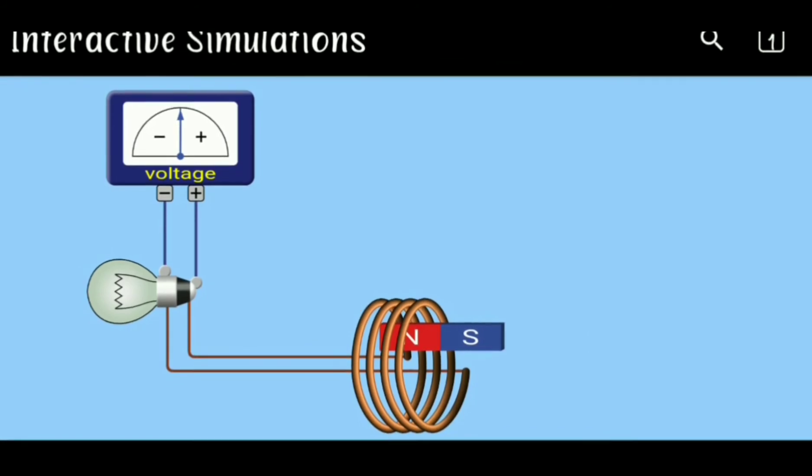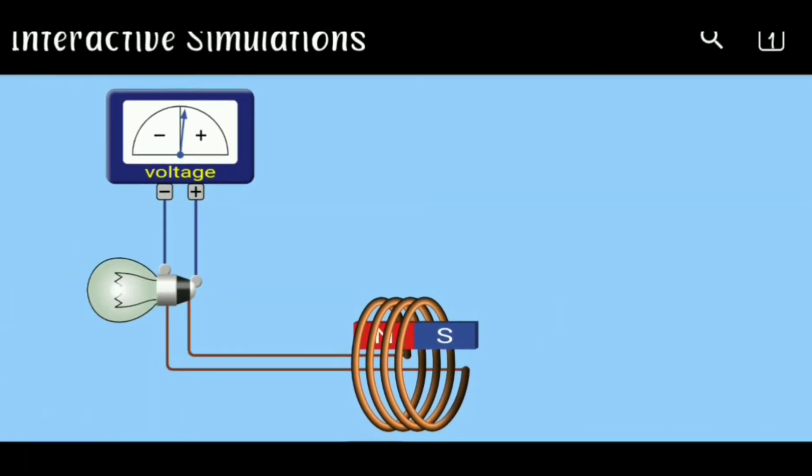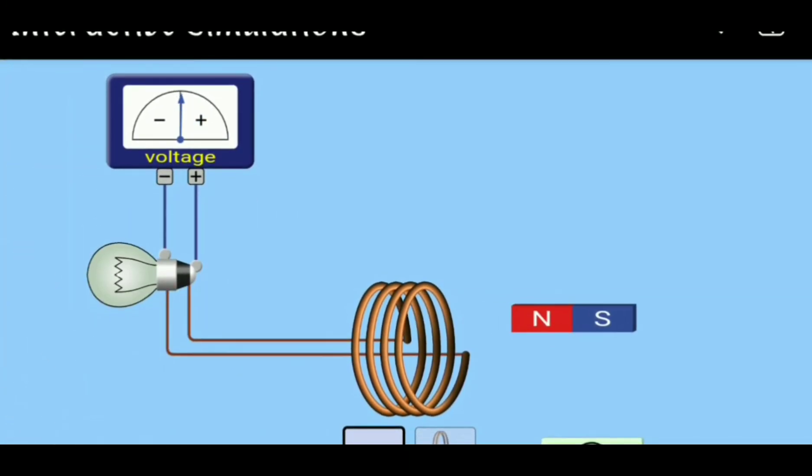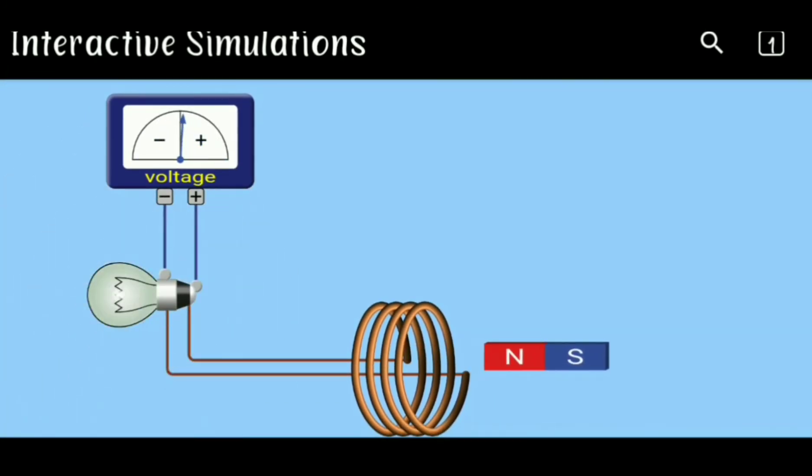Right, again the same. This is how, as long as there is relative motion between the coil and the magnet, current is induced. And when we stop the magnet, the current also stops.